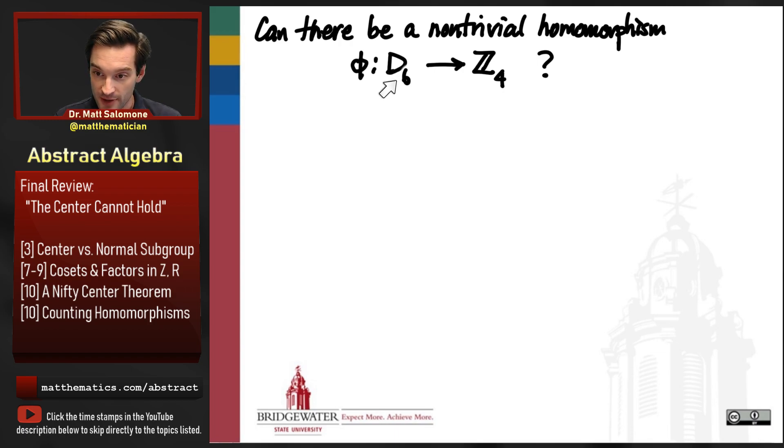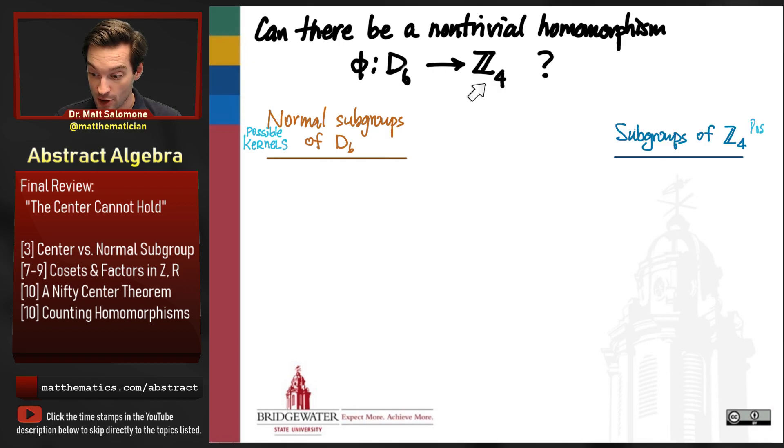So a dihedral group of the hexagon to the cyclic group of order 4. We're going to use that same strategy that we used in the last video. And that strategy is to list all the normal subgroups of the domain and list all of the subgroups of the target group. The normal subgroups of the domain are our candidate kernels. Our subgroups of the target group are our candidate images.